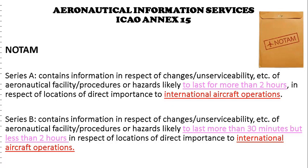The difference between Series A and Series B is that Series A is issued for durations of more than two hours, while Series B is issued when duration is less than two hours but greater than 30 minutes. The similarity is that both are issued for international aircraft operations.